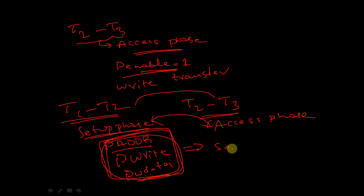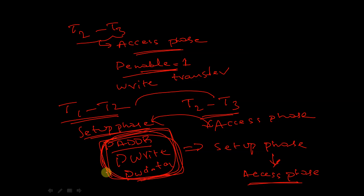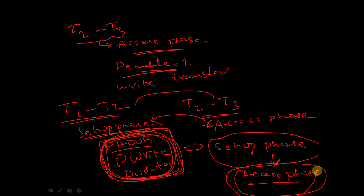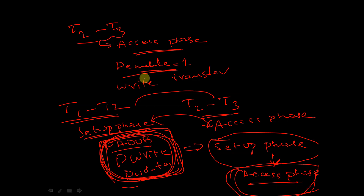During the transition between setup phase and access phase, the values of these signals — which were set in the setup phase — must remain constant when the phase changes to the access phase. During the access phase, P_ENABLE is asserted high, and the following signals must not change during the transition between setup and access, and between cycles within the access state. Exit from the access state is controlled by P_READY.